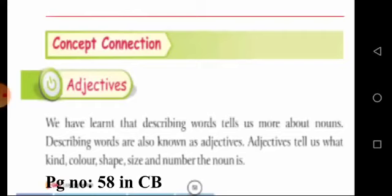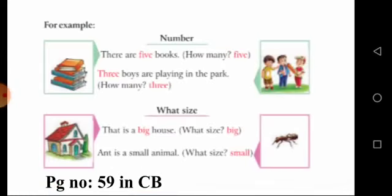Let's see some more examples. For number: there are five books — how many books? Five. That is an adjective of number. Three boys are playing in the park — how many? Three. This is also an adjective of number.